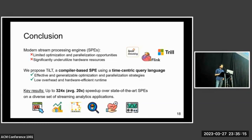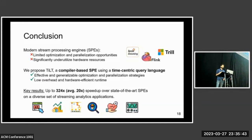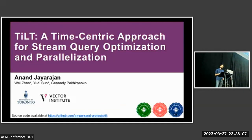To conclude, we make the key observation that modern stream processing engines have limited opportunity for query optimization and parallelization, and as a result they significantly underutilize hardware resources, performing one to three orders of magnitude slower than hand-tuned implementations. To address these limitations, we propose a compiler-based stream processing engine called TILT, which uses a novel time-centric query language called TILT IR that can perform more effective and generalizable optimization and parallelization strategies, providing a low-overhead and hardware-efficient runtime. We measure TILT's performance on a wide range of streaming analytics applications and show that TILT achieves on average 20x faster than state-of-the-art stream processing engines. TILT is open source and you can find the source code at the link provided. Thank you.